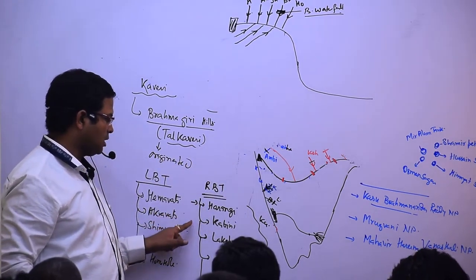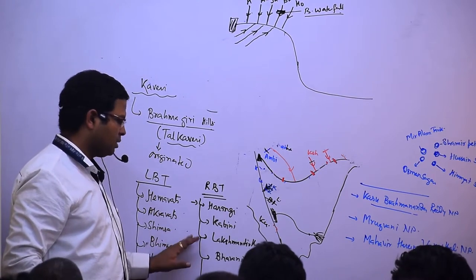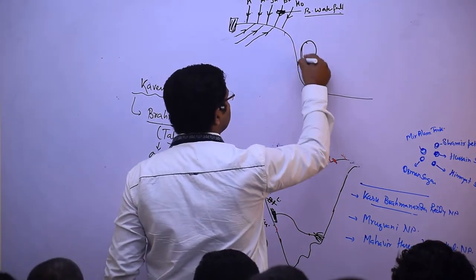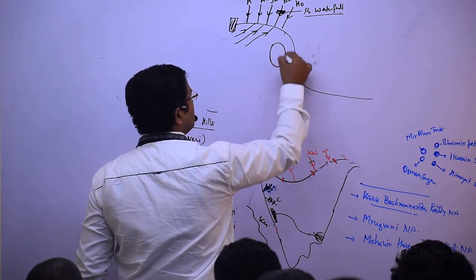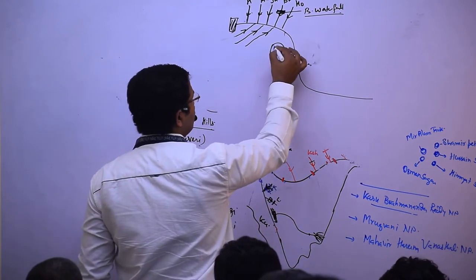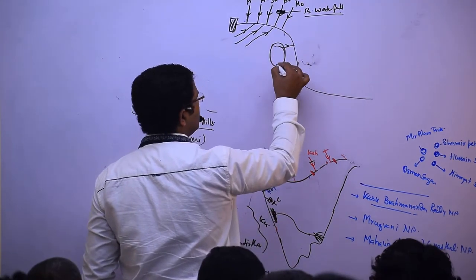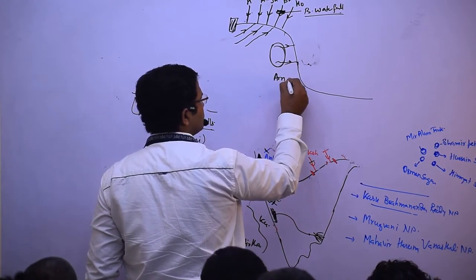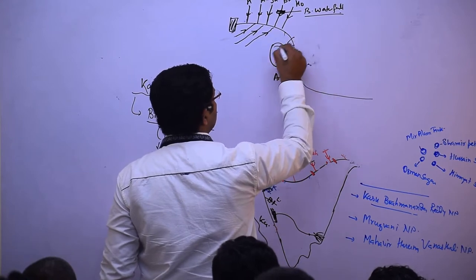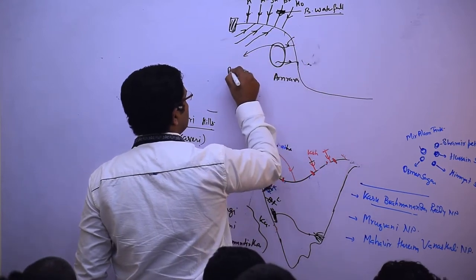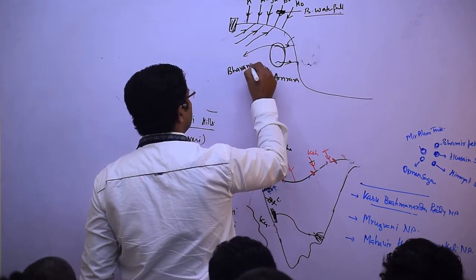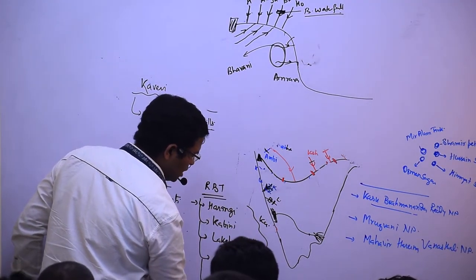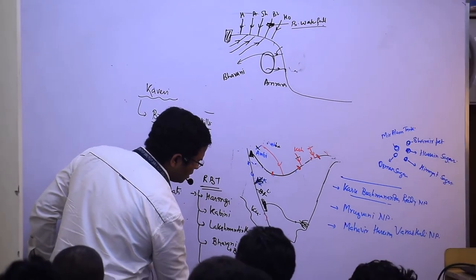Harangi, Kabini, Lakshman Tirtha. Coimbatore north has Bhavani, Coimbatore south has Amravati. Bhavani river has Bhavani Sagar dam, and Amravati river has Amravati dam.